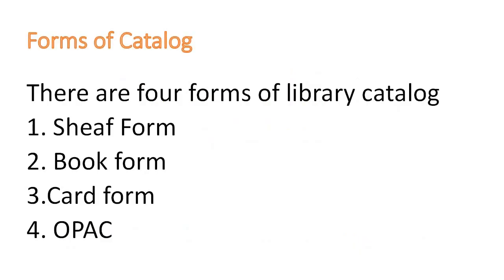There are different forms of library catalog. There are 4 forms of library catalog: number 1, shelf form; number 2, book form; number 3, card form; and number 4, OPAC.